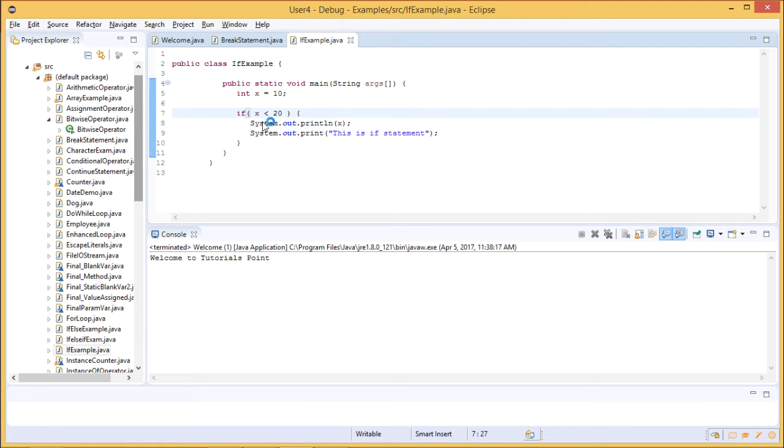If this condition is met, or if the condition is true, then the block of statements are executed. If the condition is not met, then it is terminated. Here x value is 10. It will check if x is less than 20. Yes, 10 is less than 20. It will print the value of x and it says yes we are in if statement.